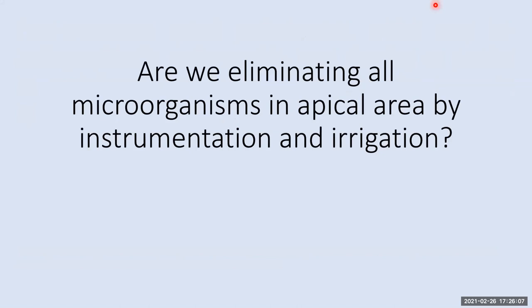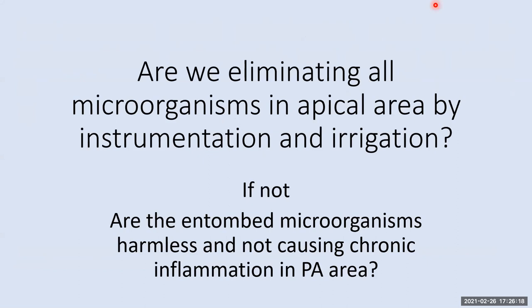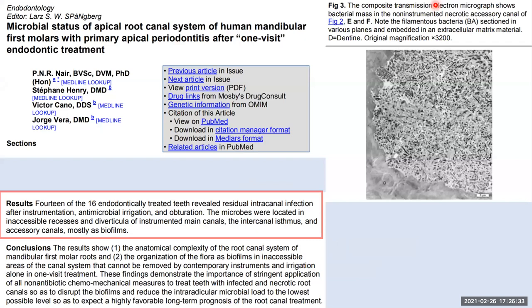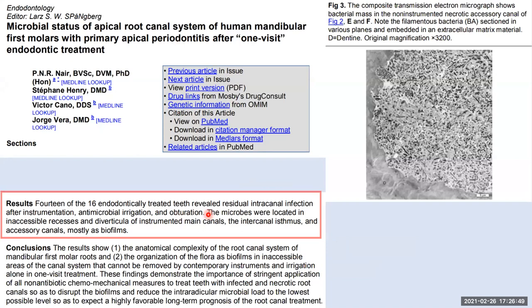The question is: are we eliminating all microorganisms in the apical area by instrumentation and irrigation? If not, what is the fate of these entombed microorganisms? Are they harmless and not causing chronic inflammation in the periapical area? A study assessing the microbial status in the apical part of the root canal system found that 14 out of 16 endodontically treated teeth revealed residual intracanal infection after instrumentation, antimicrobial irrigation, and obturation — microbes located in inaccessible areas.